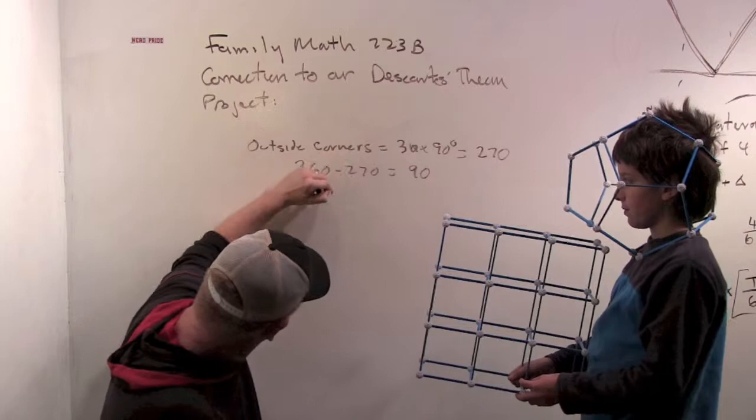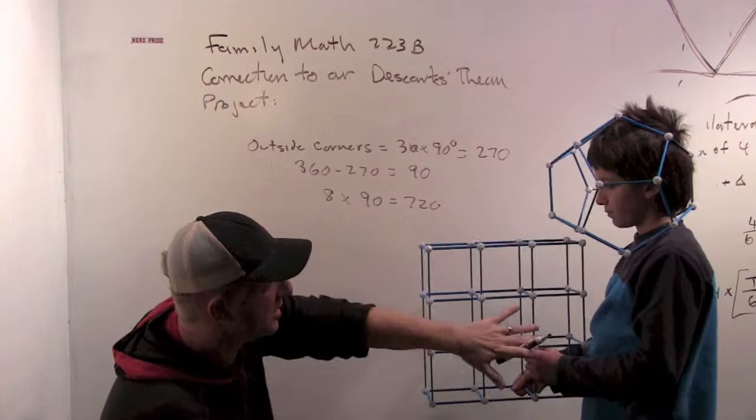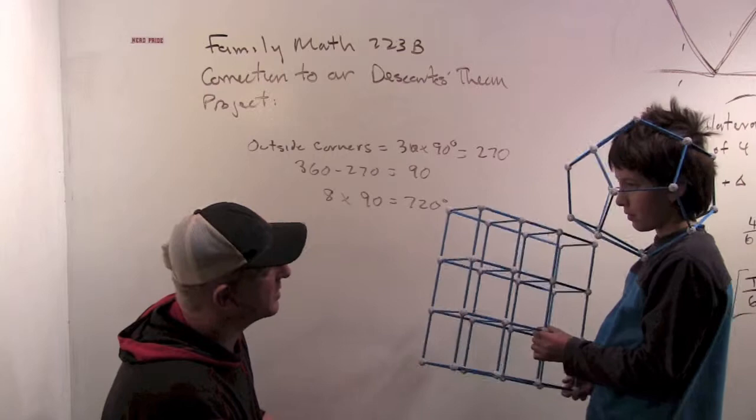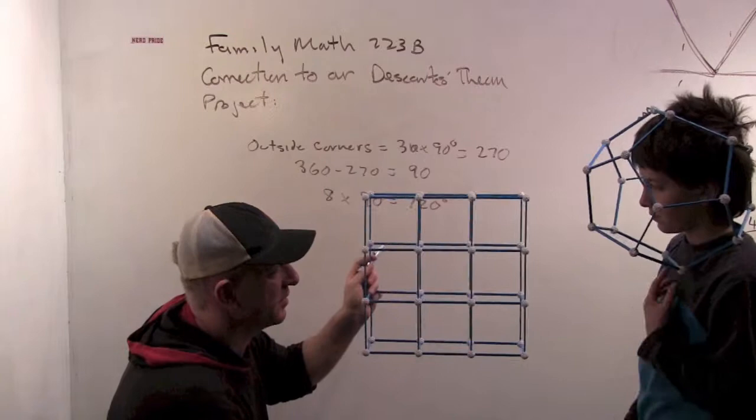So, and if this were solid on the middle, we'd be done, right? And we would have gotten our 720 degrees that we get for the cube. Yeah. Right, but it's not solid in the middle. It's got a hole in the middle. It's got a hole in the middle, so we have to do the same calculation for these eight corners here.